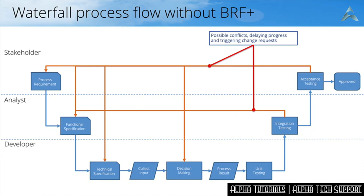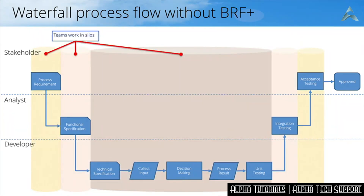Remember, the Waterfall process has a fixed date in the future — so the more often you have to use these conflict lines and go back in the process, the more likely it is that there will be pressure on delivering on time. Also, the Waterfall process encourages but doesn't enforce collaboration. A process requirement is handed over to the analyst, who makes their interpretation of what the stakeholder wants, and then the developer makes its interpretation of the functional specification — so things can get lost in translation, meaning the decision-making part could have features that are not fit for purpose or missing functionality the stakeholder is expecting.